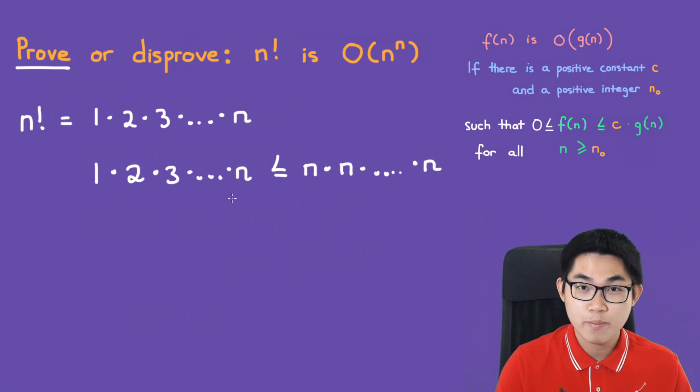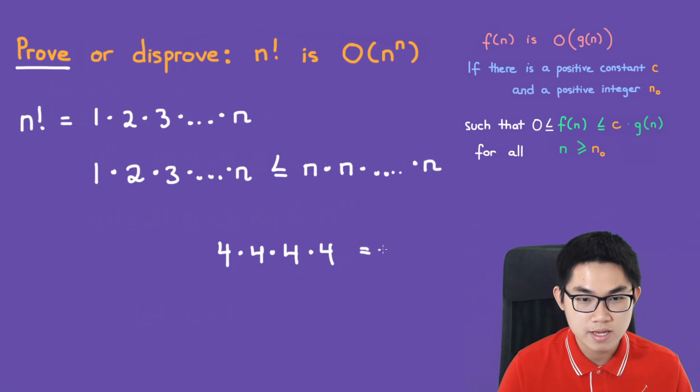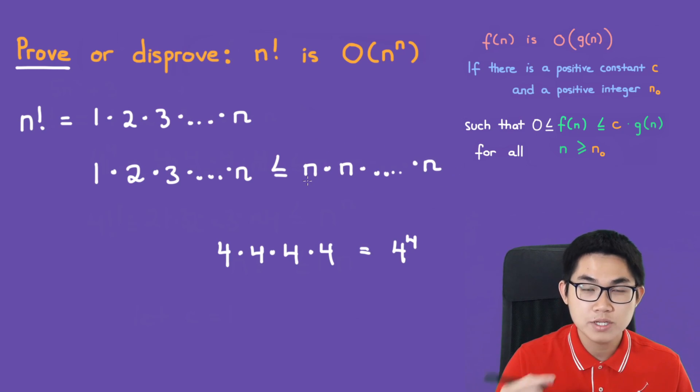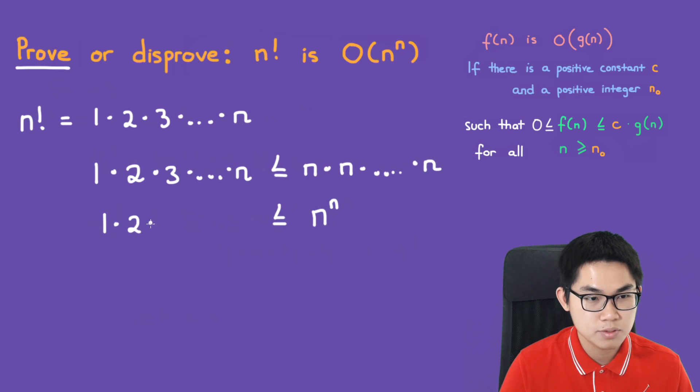If you remember what I said before, if you have 4 times 4 times 4 times 4, this will be 4 to the power of 4. The same principle applies here. You have n multiplying itself n times, so we have n to the power of n, which is larger or equal to 1 times 2 times 3 times dot dot dot times n.